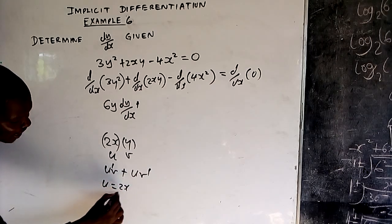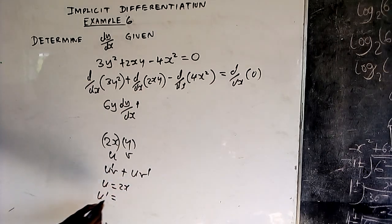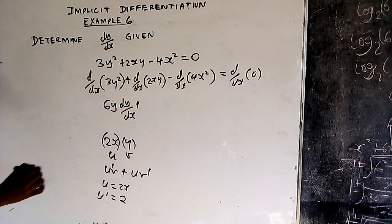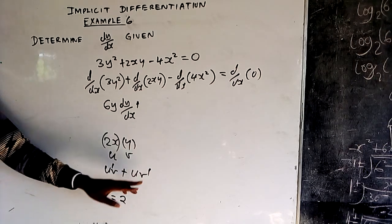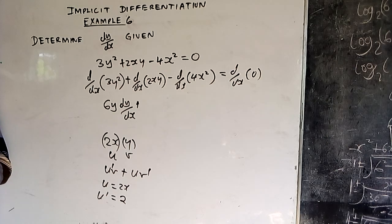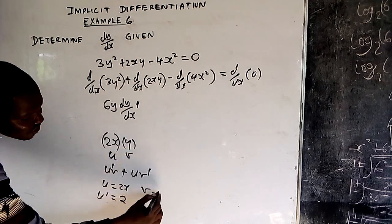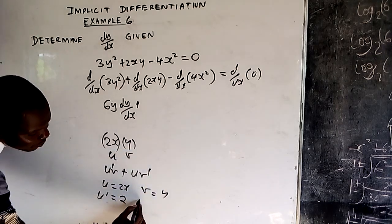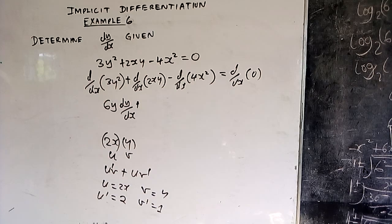So u is 2x. If you differentiate u, you differentiate 2x to get 2. Then v is y. If you differentiate v, you get dy/dx, because you are differentiating a y with respect to x.